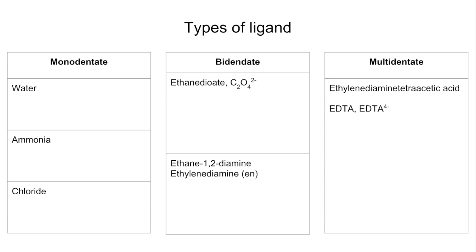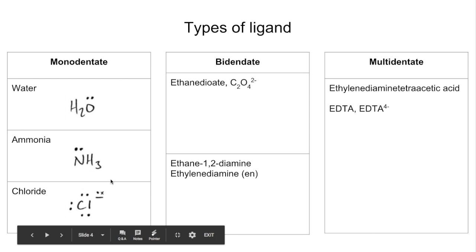We'll start with the different types of ligands. We can get monodentate ligands, and you'll see water's in there: water, ammonia, and chloride ions. They're referred to as monodentate because they can form one coordinate bond with the central transition metal ion. You can see I'm showing the lone pair. Now you know that water has two lone pairs on the oxygen, but we only use one of them to form the coordinate bond. There's a lone pair on the nitrogen, and we've got four lone pairs around the chloride ion, but one of them is used to form this coordinate bond.